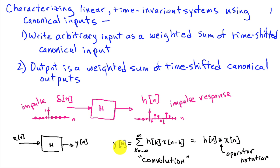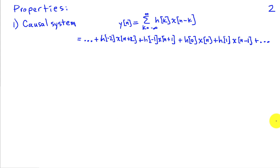This describes the output in terms of the input x of n and the impulse response h of n. The expression for the convolution sum, expressing the output in terms of the impulse response and the input, lets us see certain properties of the system in terms of the impulse response.